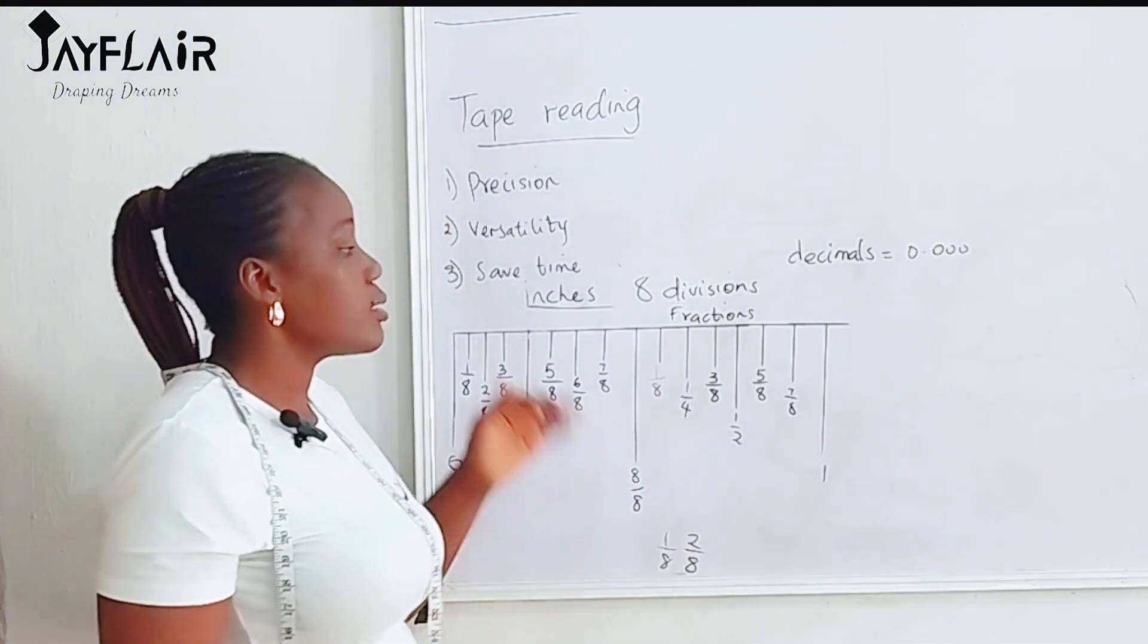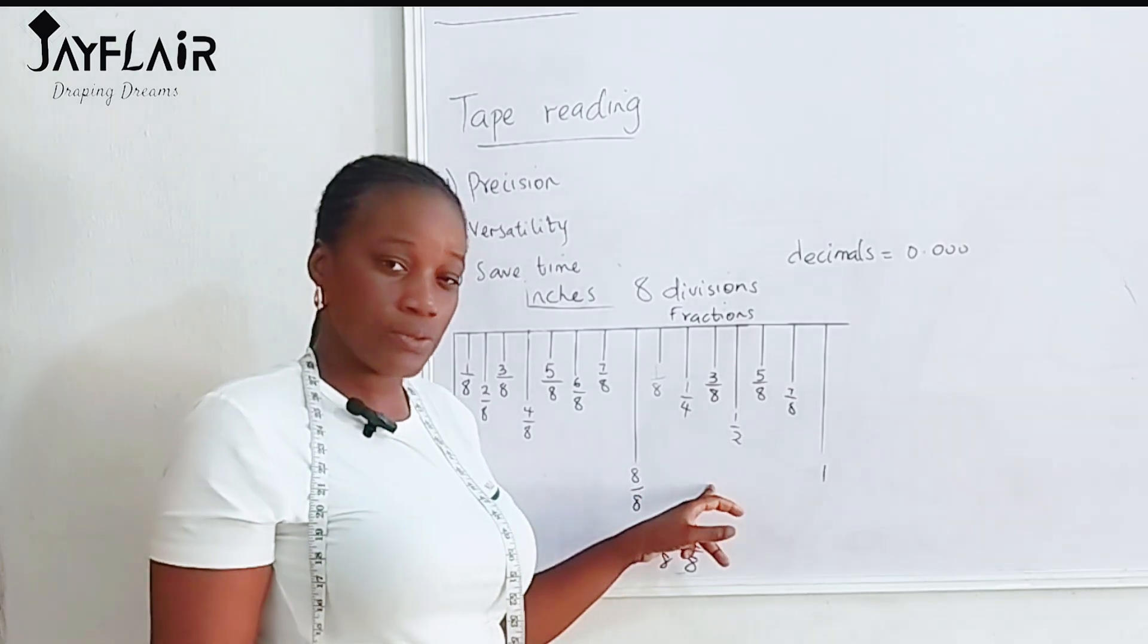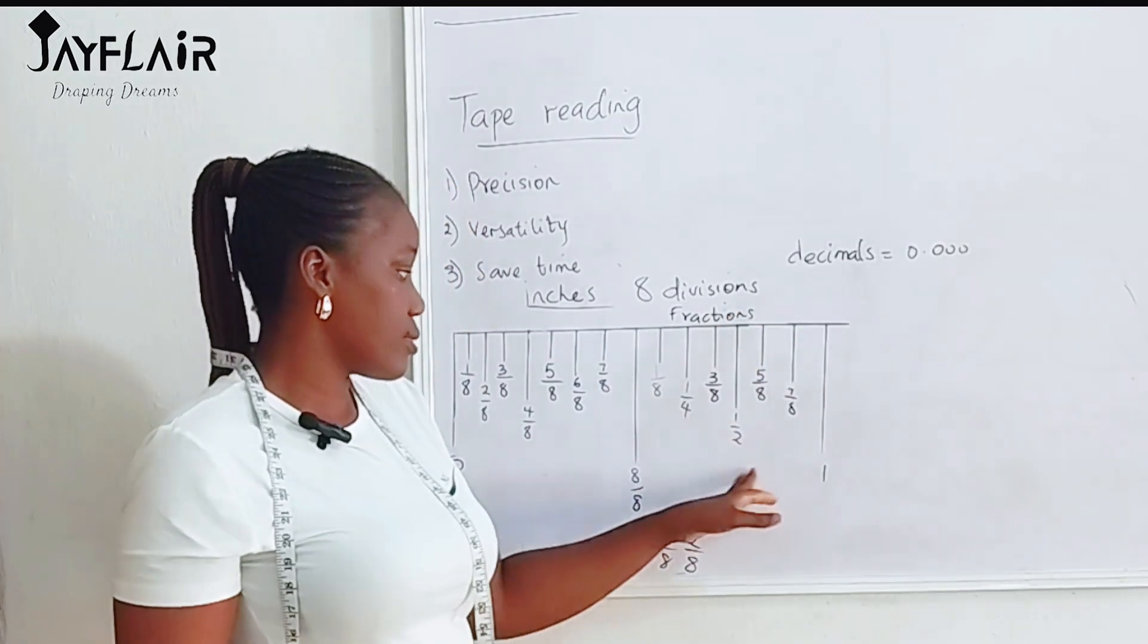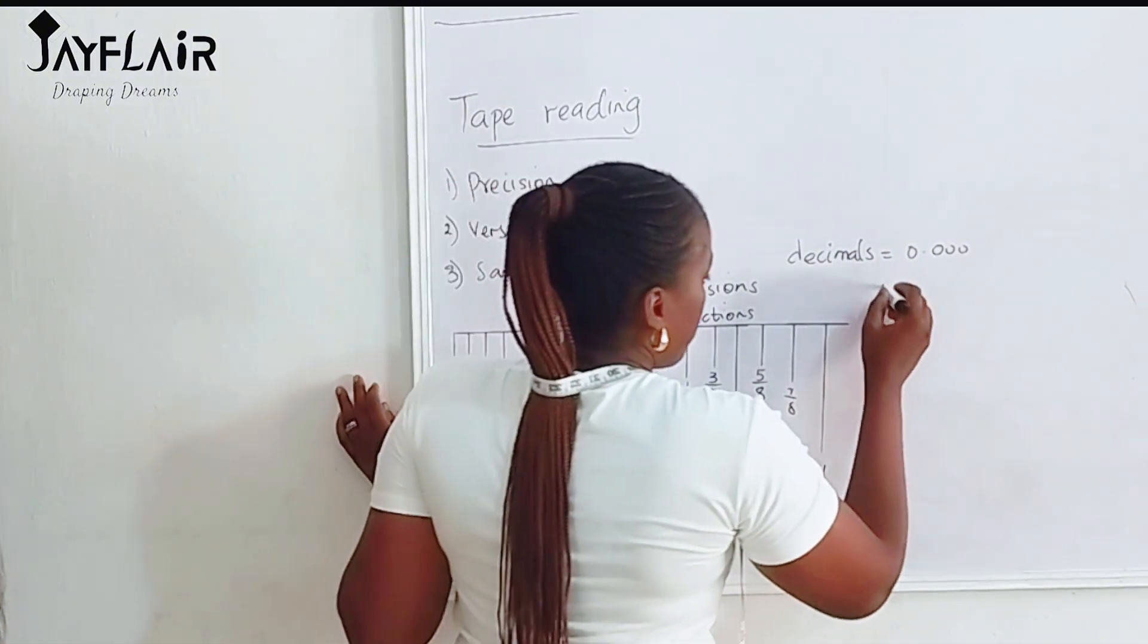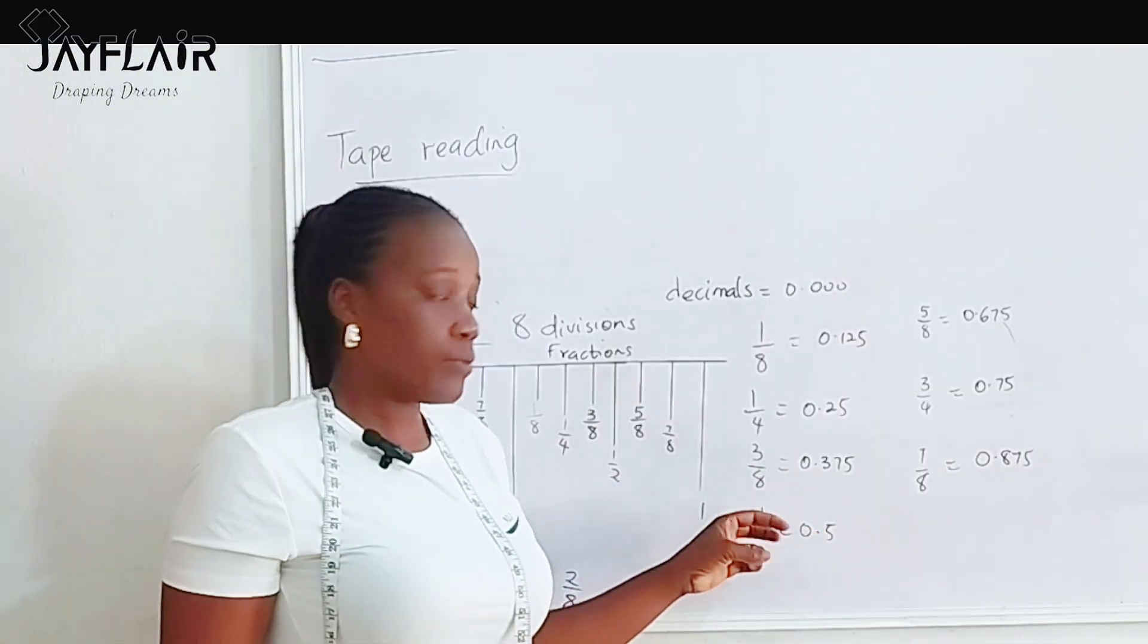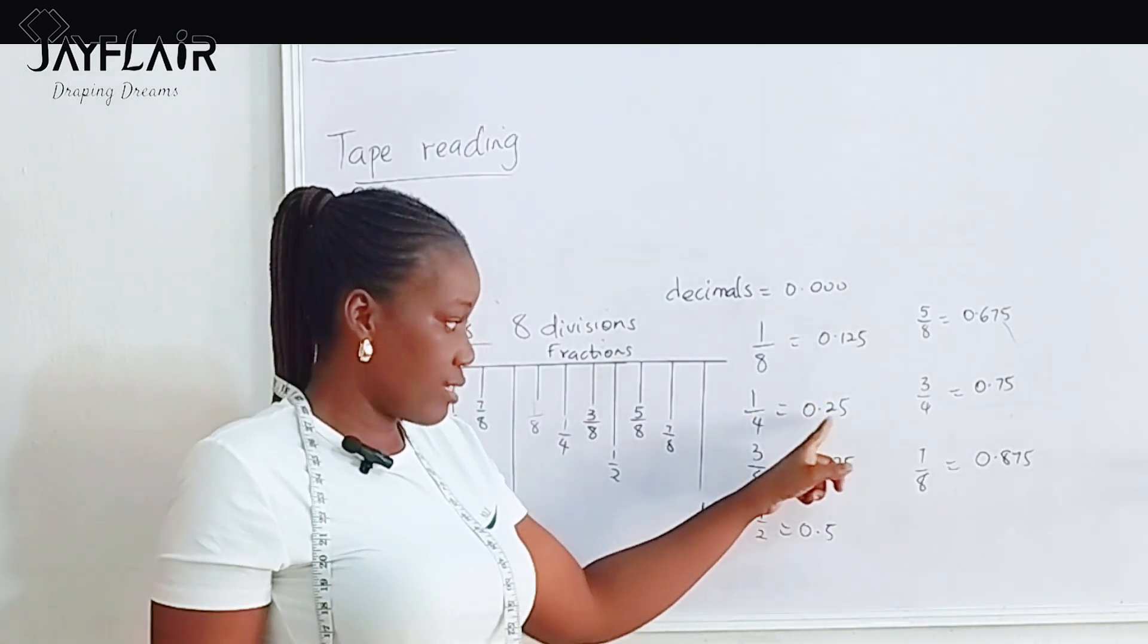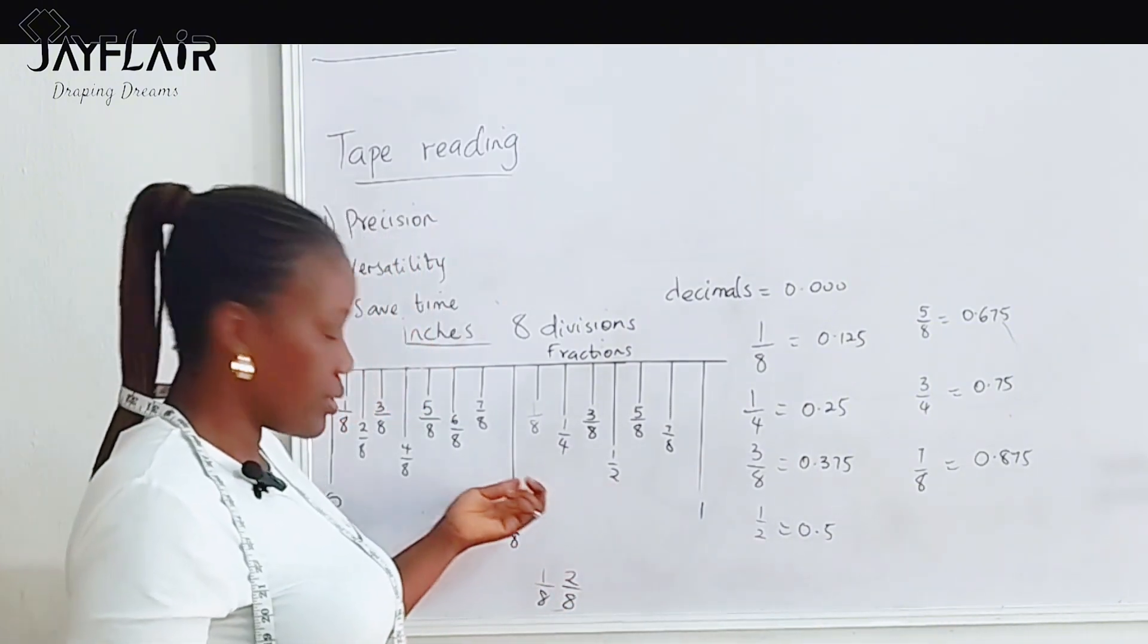So it's necessary that you understand the conversion from fraction to decimal for each of these numbers. So I'm going to write them on the board. These are the conversions. Any time you point your calculator and you see any of these, the numbers after the decimal points, you should be able to link it to any of these.